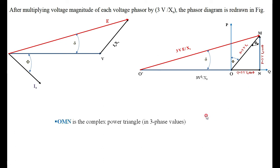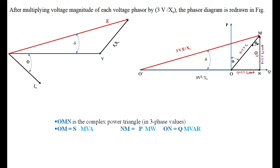In triangle O-m-n, this is the complex power triangle in three-phase values, because we multiplied all voltage vectors by 3V/Xs. O-m is S, the megavolt-ampere of the alternator. N-m is the active power in megawatts, and O-n is the reactive power in MVAR. Therefore, we are resolving the apparent power into active power and reactive power.